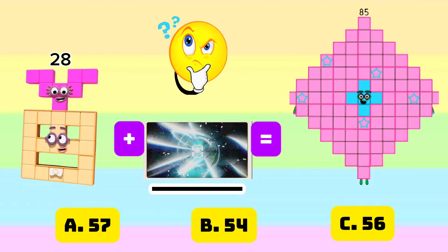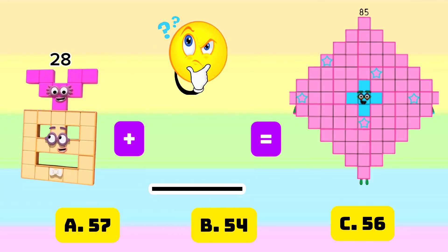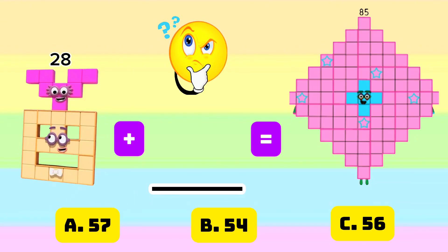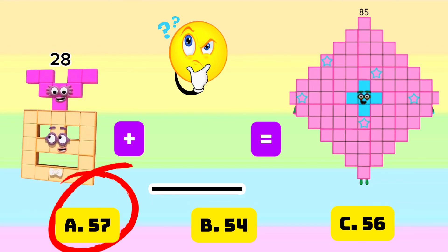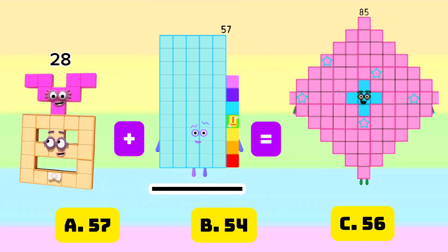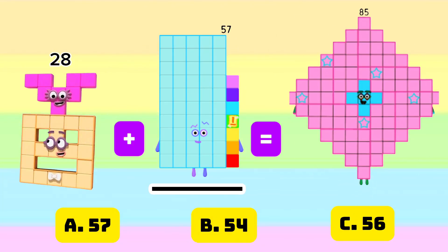And the missing addend is letter A, 57. 28 plus 57 is equals to 85.